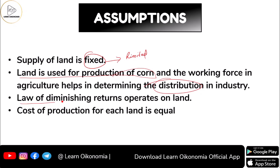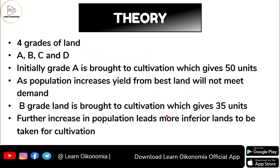As mentioned earlier, the law of diminishing returns operates on land. When you use the very same plot of land for the cultivation of some crops again and again, the successive returns from that land go on diminishing. He also assumes that the cost of production for each land is equal. With that, we can move on to the theory of Ricardo.